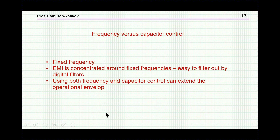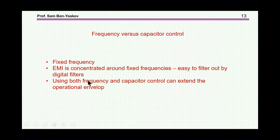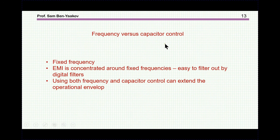What are the advantages of capacitor control compared to frequency control? For one thing, we run the resonant converter at a fixed frequency. This has the advantage that the EMI is concentrated at fixed frequencies, which are easy to filter with digital filters — very important in communication systems, radar, and other systems where you don't want interference spread across the spectrum. Another option is to run both frequency and capacitor control simultaneously, which extends the operational envelope of the converter, enabling it to cope with a wider input voltage range and wider load range.